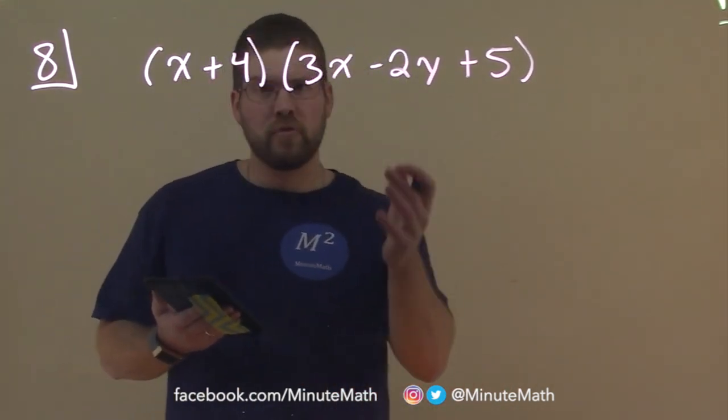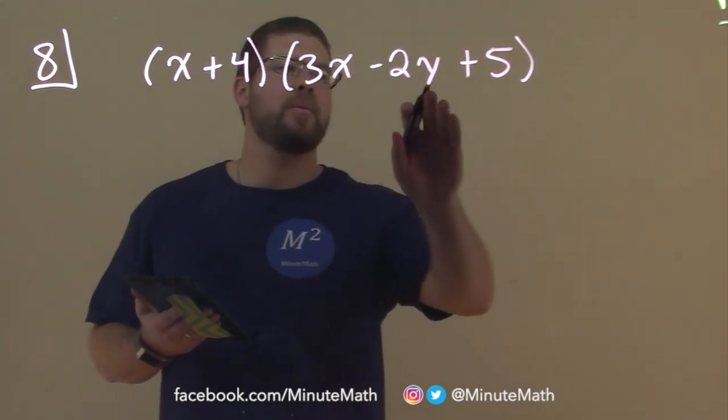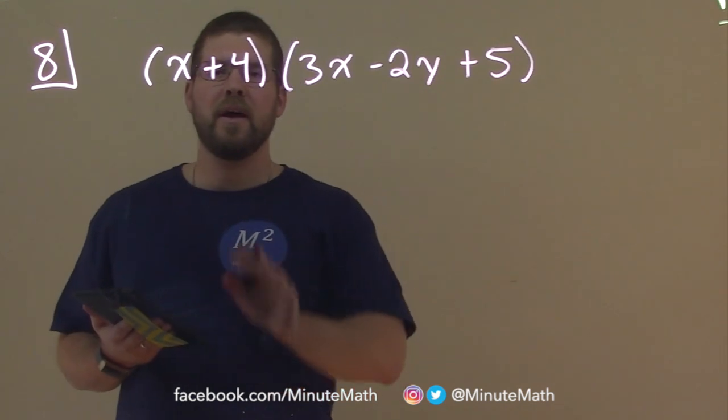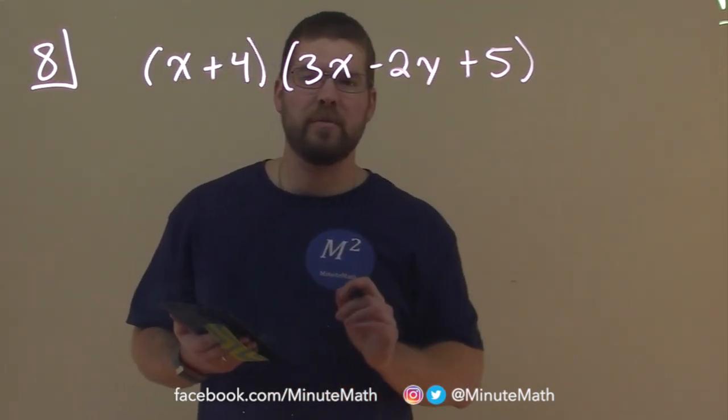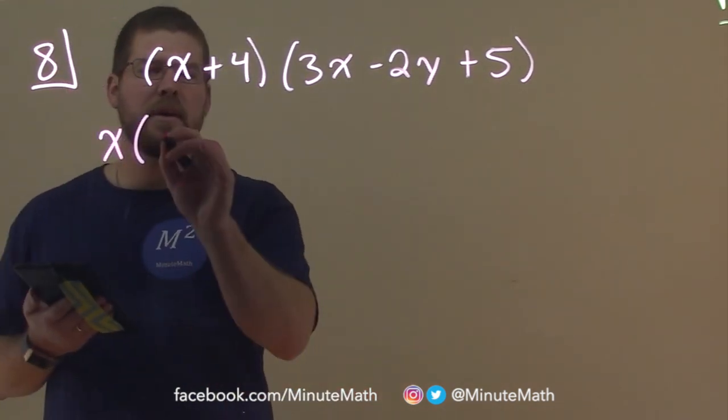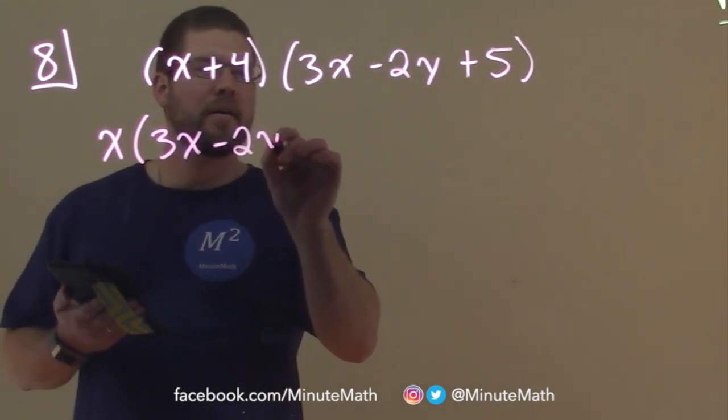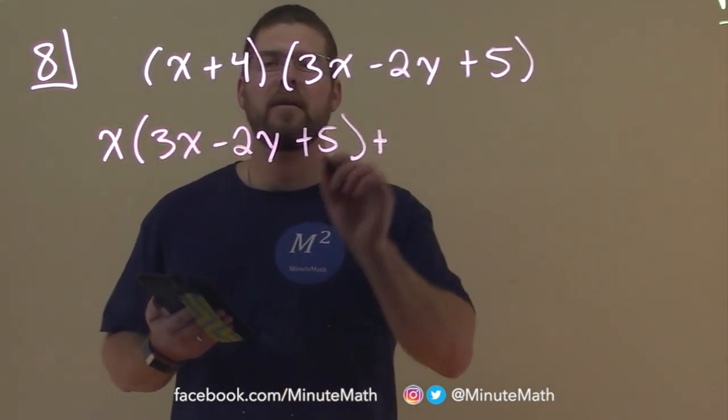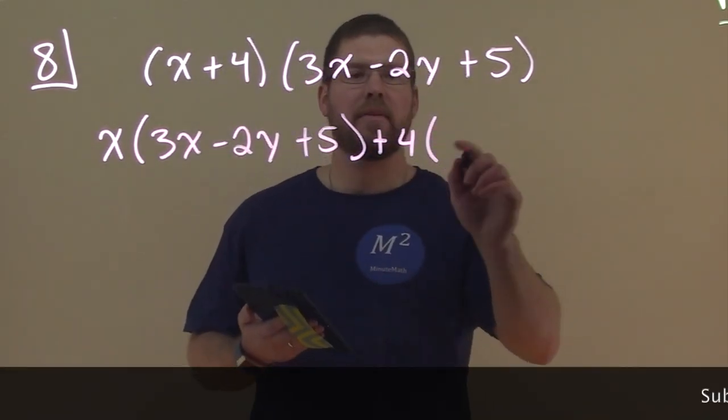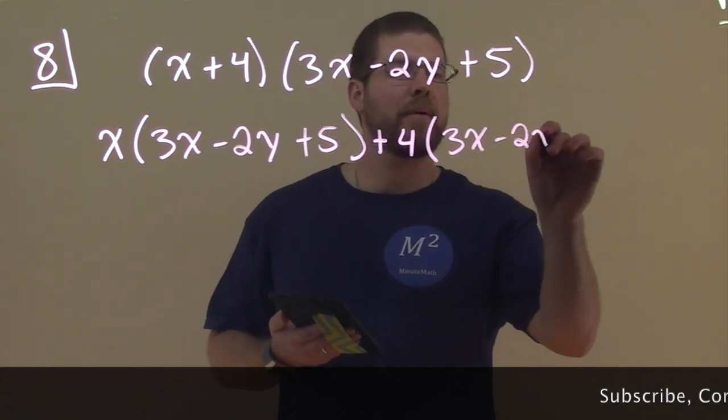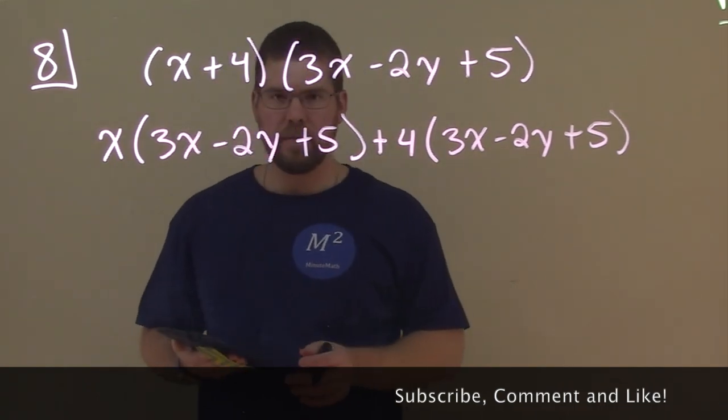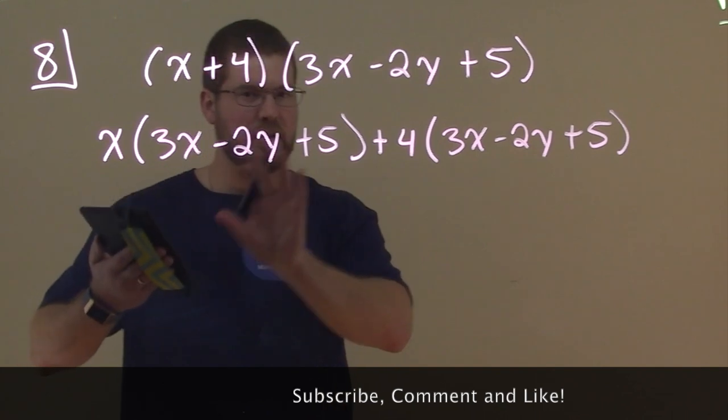So our rules still apply though with distributing. We'll have to multiply the x by every single term in the second parenthesis, and the 4 by every single term in the second parenthesis. I always say, all terms of one parenthesis multiplied by all terms of the second parenthesis. So let's take our time here. We have x, the first term, times (3x - 2y + 5), and then I added to 4 being multiplied by the whole parenthesis (3x - 2y + 5). And this is a way to show your work. Sometimes you can do a lot of arches, that's how I like to do it, another way. But I'm doing it this way because I think it really shows what's going on here.